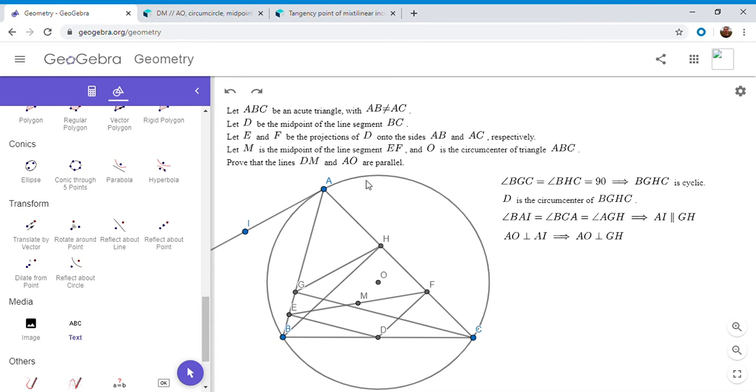So we've established that. So now we want to show that DM is perpendicular to GH because that would help us show that DM and AO are parallel. So how do we do that? Well, one thing to notice is we want to show DM is perpendicular to GH. But D is the center of the circle through B, G, H and C. And so the perpendicular from D to GH has to be the midpoint of HG.